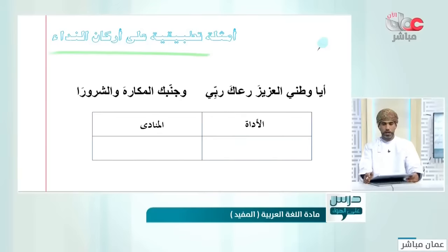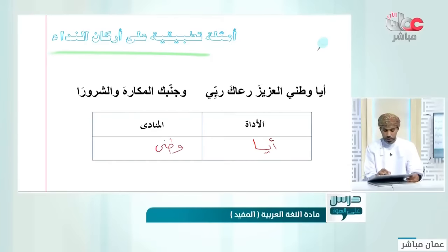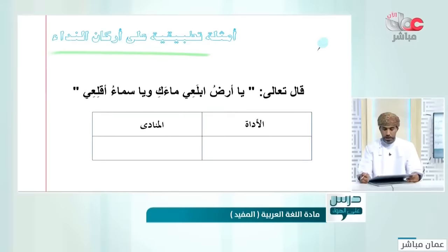مثال آخر: أيا وطني العزيزة رعاك ربي وجنّبك المكاره والشرور. الأداة المستخدمة للنداء هي 'أيا' والمنادى 'وطني'. إذن أسلوب النداء هنا: أيا وطني العزيزة.